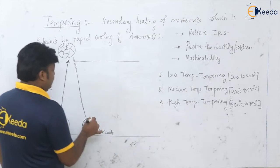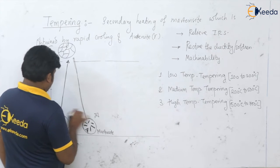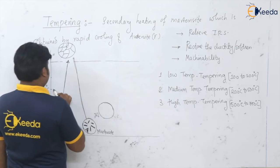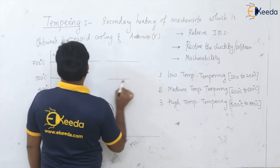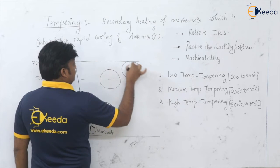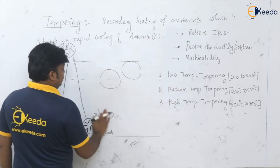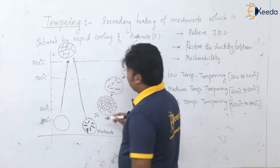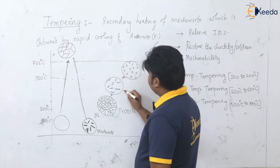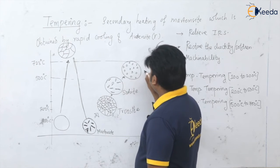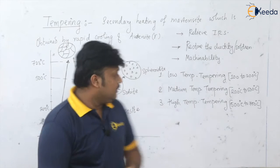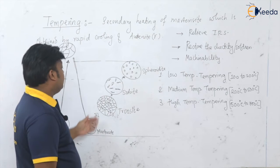Now let me draw this diagram. For low temperature tempering we get one structure, for the range of 500 to 700 degrees centigrade we get another. The products we get after heating of martensite are: troostite, sorbite, and spheroidite. These are the products of the heating of martensite.